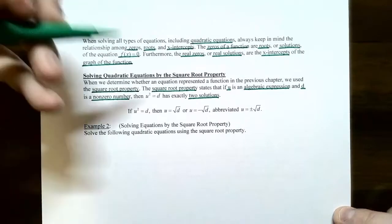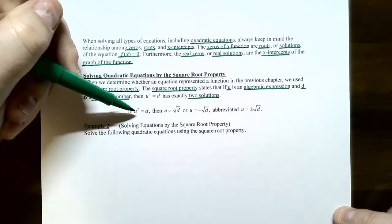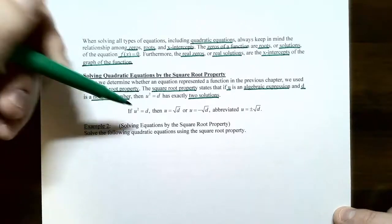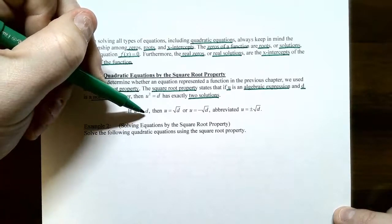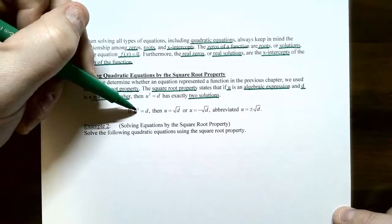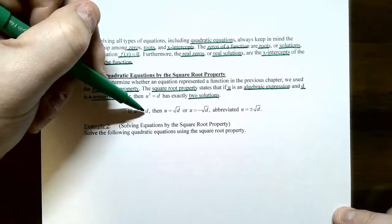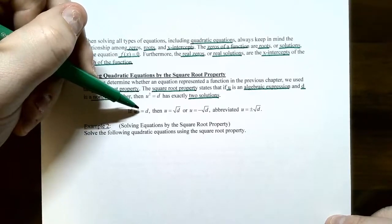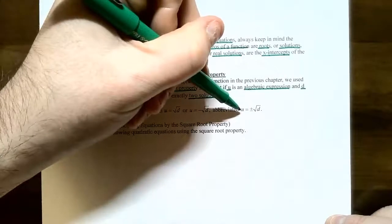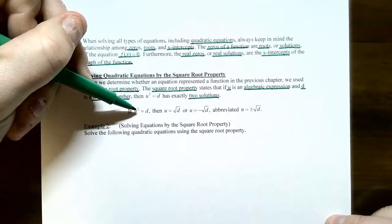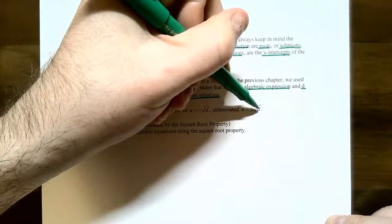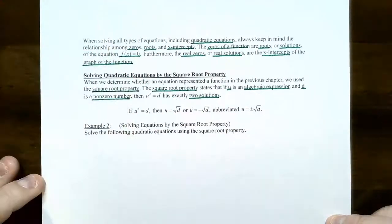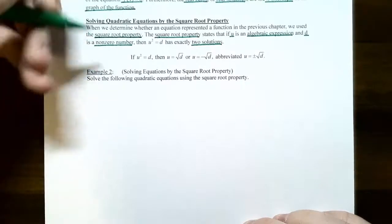How do you find the two solutions? If you have one side of the equation being squared — keep in mind that u is an algebraic expression, it could be x or it could be 2x plus 1 all squared — you have something squared on one side and a non-zero number on the other. You take the square root on one side to cancel out the square power, but you have to do the same thing on the other side. Whenever you use a square root to cancel a square power, you insert a plus or minus, giving you u equals plus or minus the square root of d — that's where you get the two solutions.